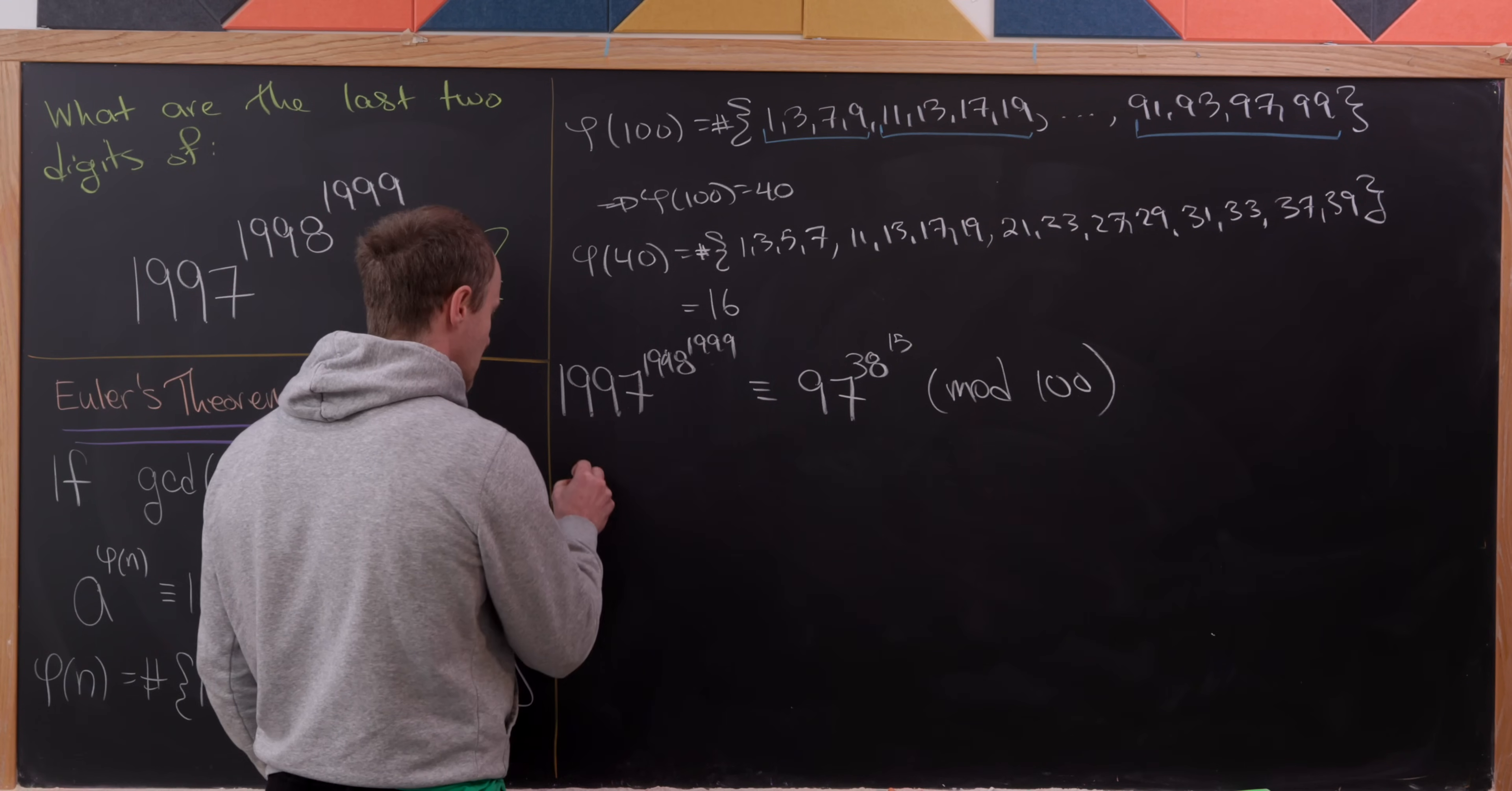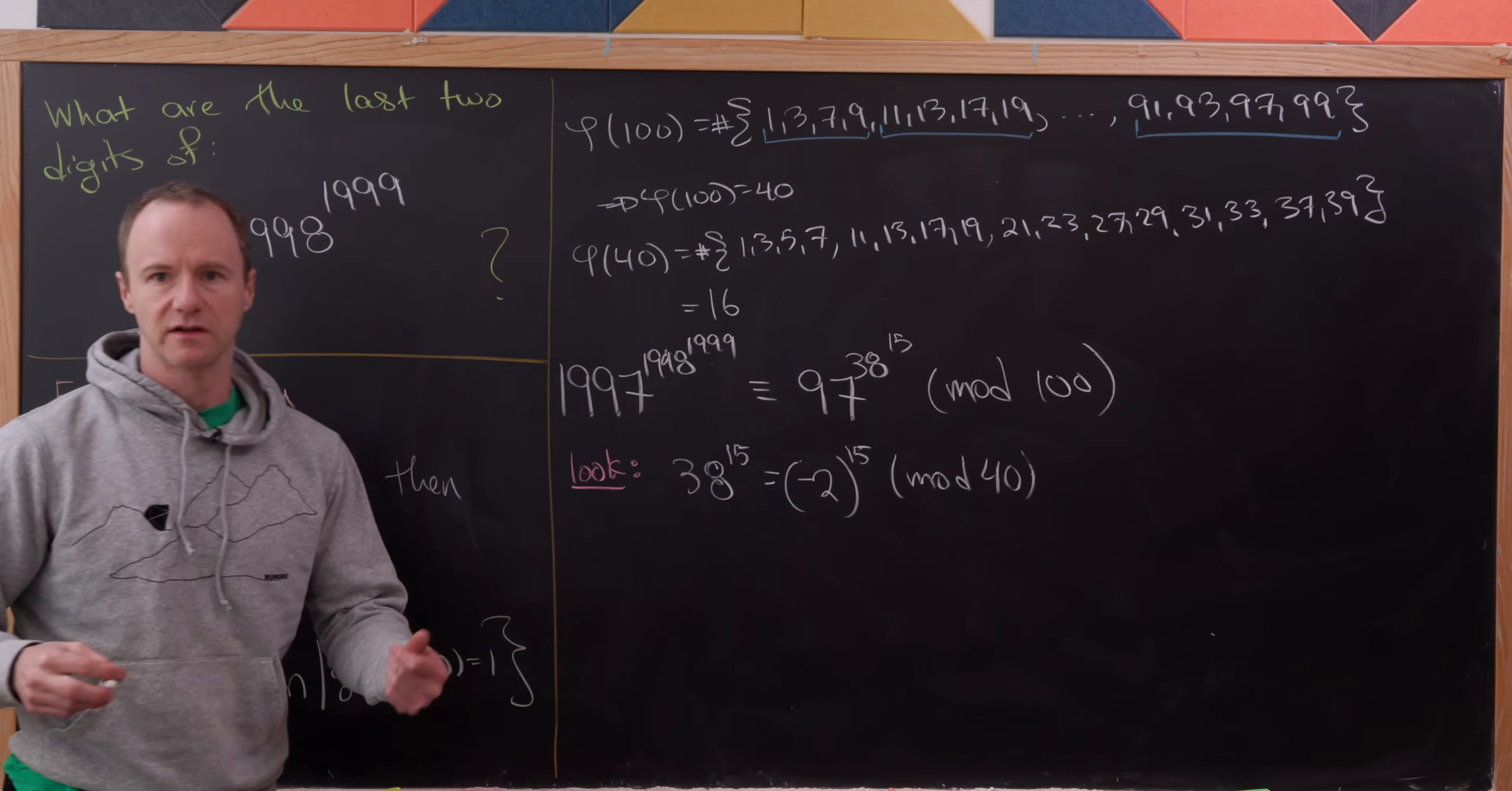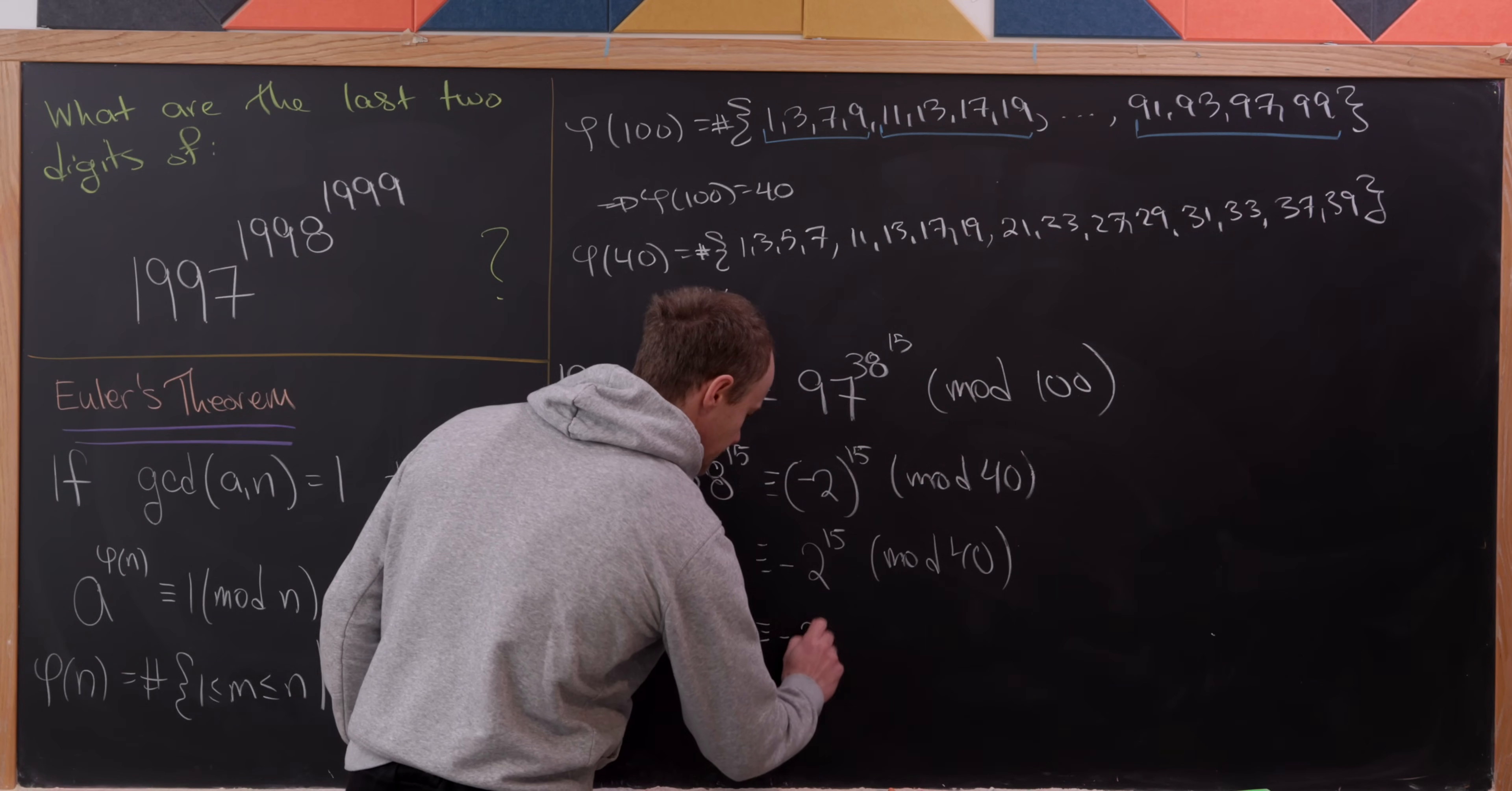Now let's look at what's going in that exponent, 38 to the power 15. Notice we're reducing that mod 40. I can write that as negative 2 to the 15 modulo 40, because 38 is pretty clearly equal to negative 2 mod 40. That is going to be negative 2 to the power 15 mod 40, because we've got an odd power of a negative number.